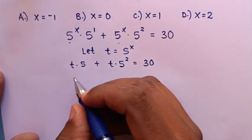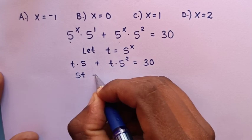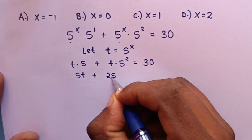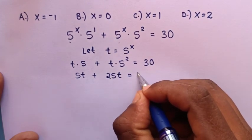Multiplying, this is 5t plus, 5 squared is 25, so 25 times t is 25t, equals 30.